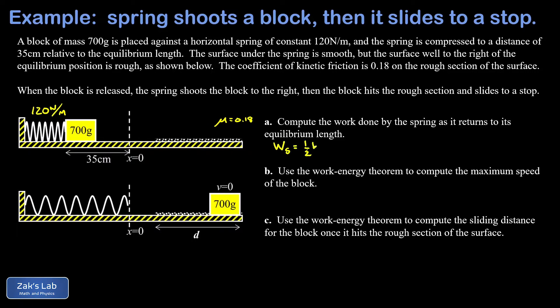And that turns out to be one-half k x squared, where x is the compression distance from the equilibrium position. And this is assuming it returns all the way back to its equilibrium position, which it does in this problem. So I just plug in k equals 120, initial compression distance 0.35, you gotta square that, and when we run the numbers on this we get 7.35 joules.